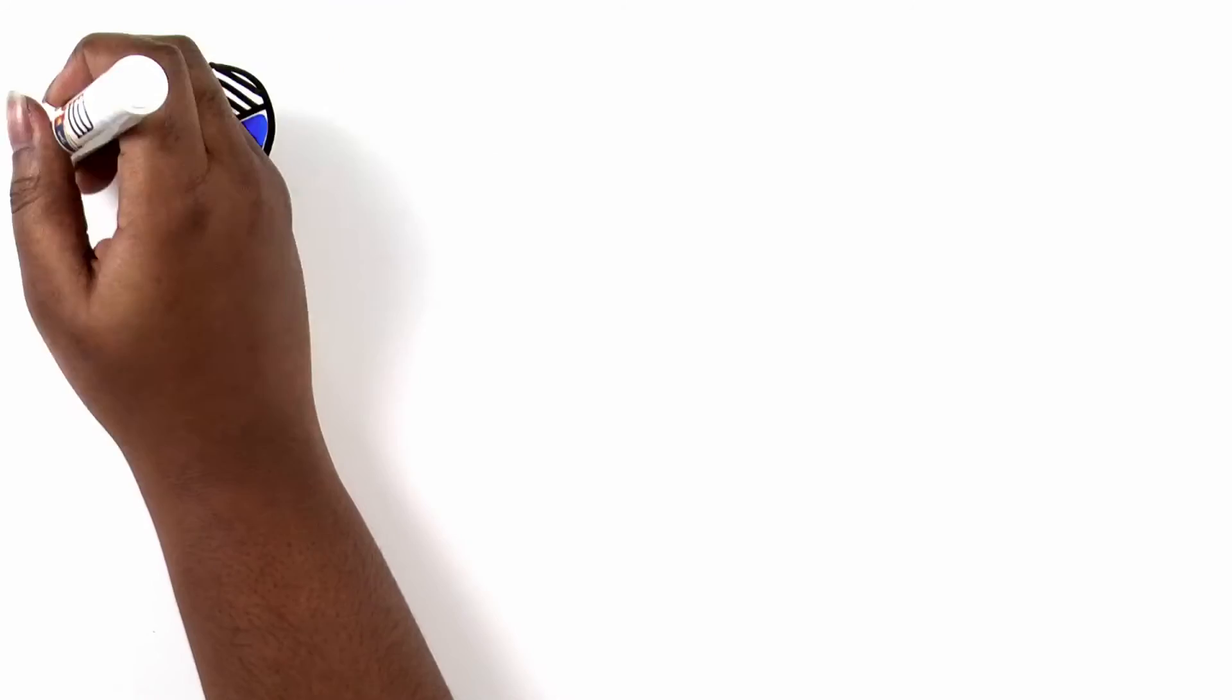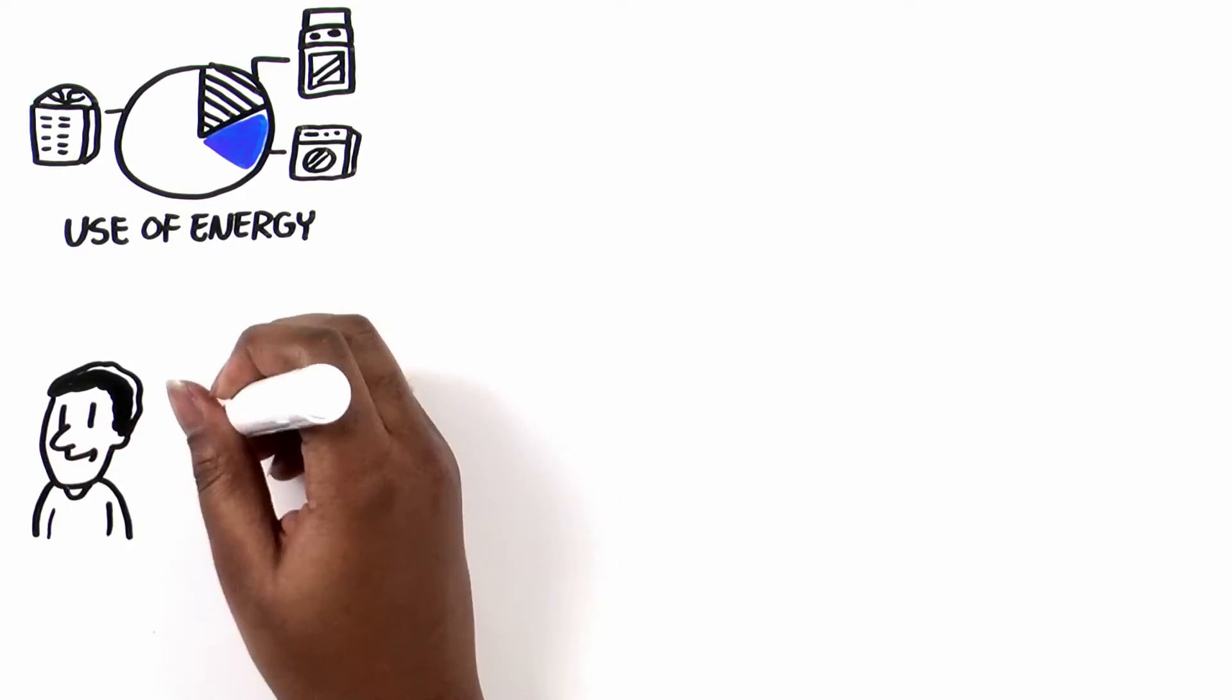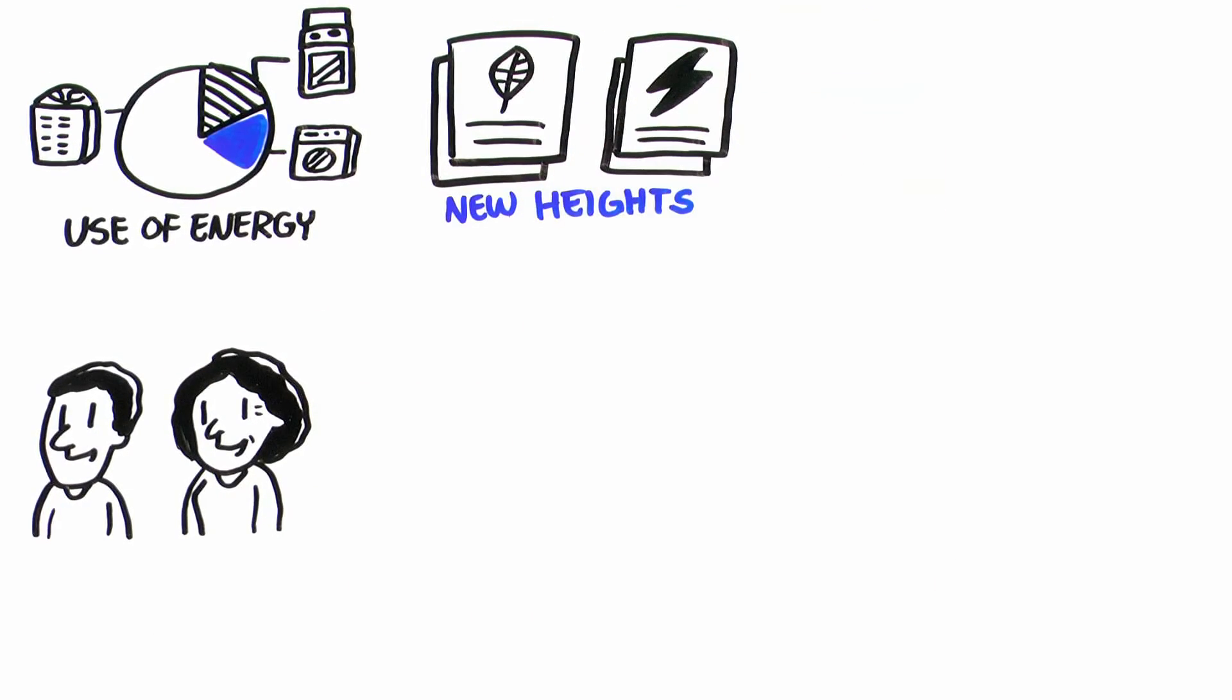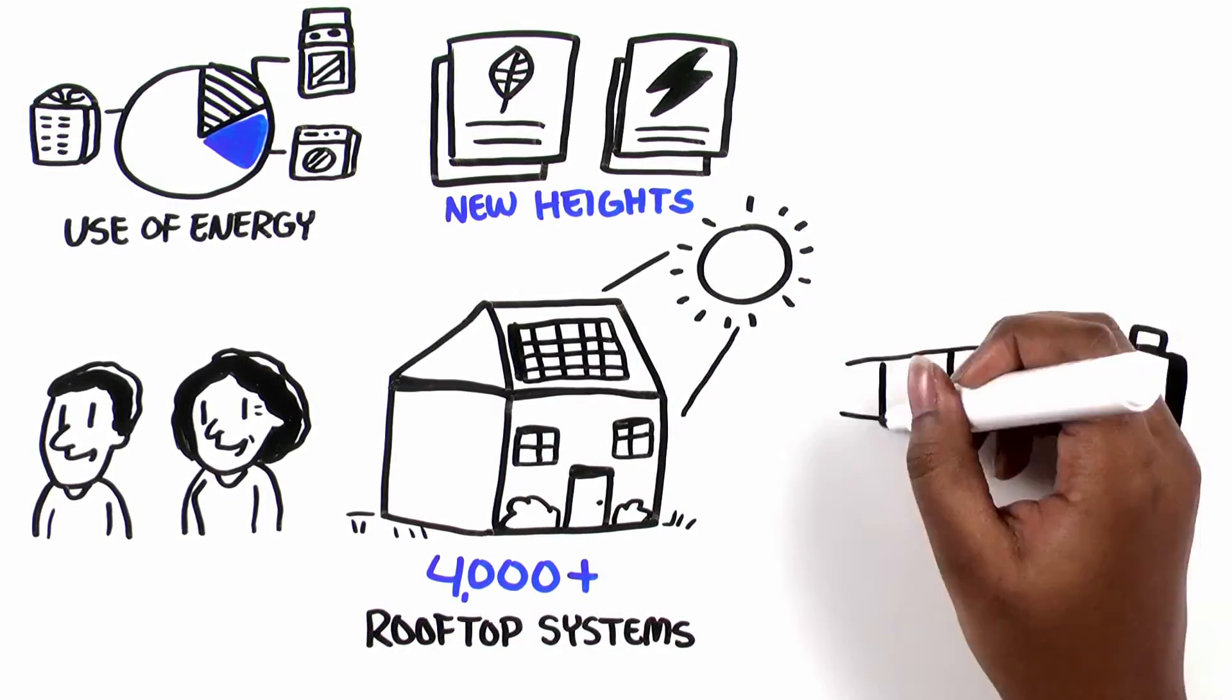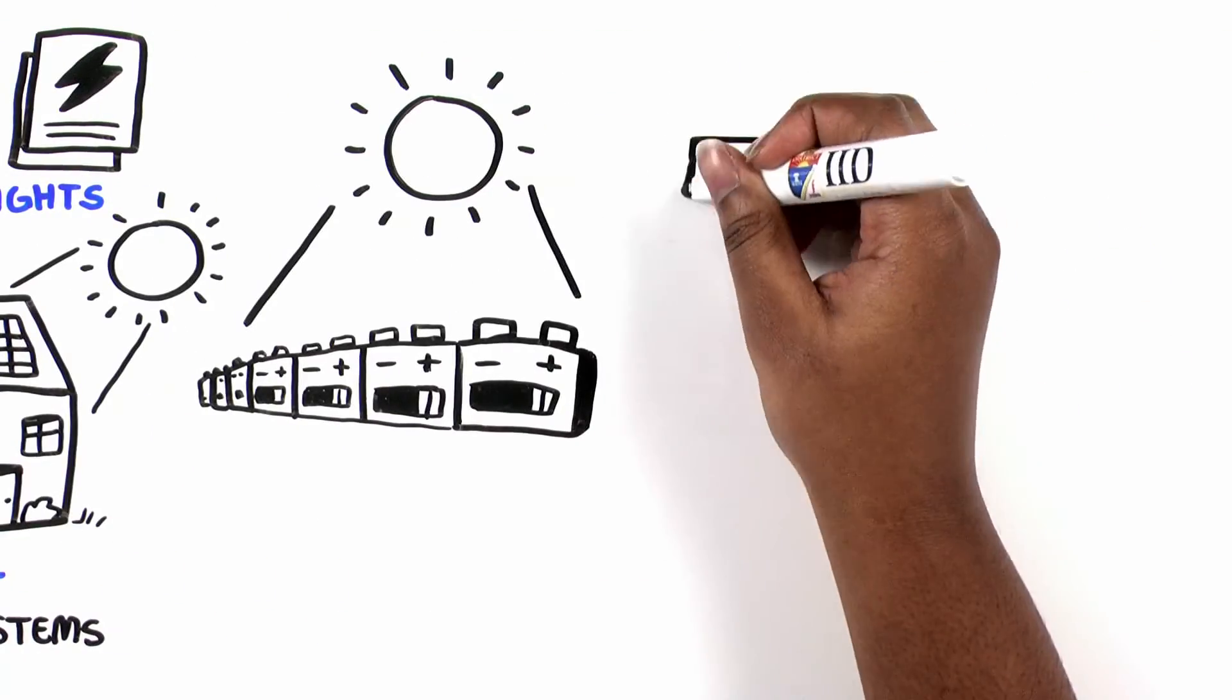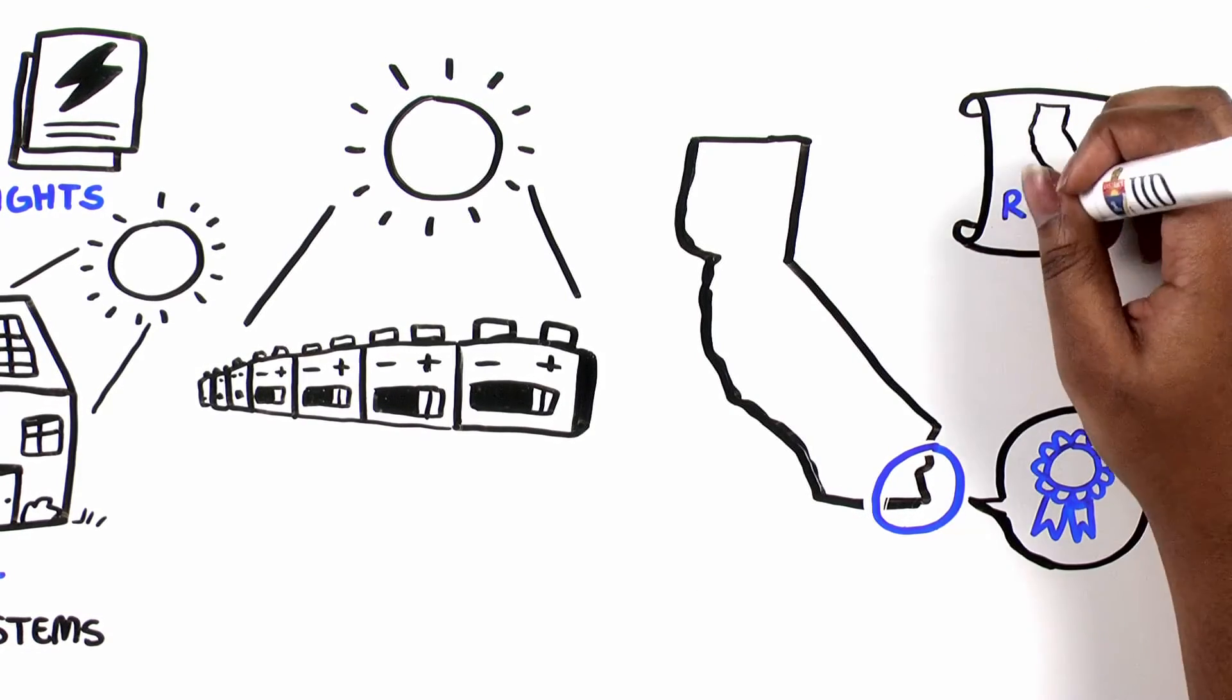We understand that our customers use energy differently. That's why IID has created programs that have helped us reach new heights in renewable energy. We've connected more than 4,000 solar systems to the grid and are in the process of developing new community solar and storage programs, while continuing to outperform targets set by California's renewable portfolio standard.